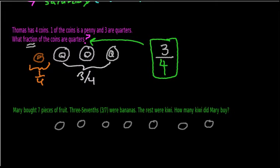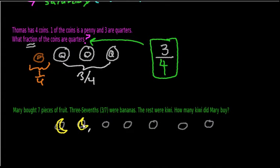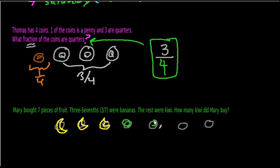We know that of these seven pieces of fruit, three-sevenths are bananas. That means more precisely that out of these seven, three must be bananas. So let's make three of them bananas, and I'll draw a banana for each. We have one, two, three bananas out of seven. How many kiwis must there be? Well, if the rest are kiwis, we know we have the remaining items — let's color them green to make it clear we're dealing with kiwis. And here we have one, two, three, and four. So the four remaining items are all kiwis.